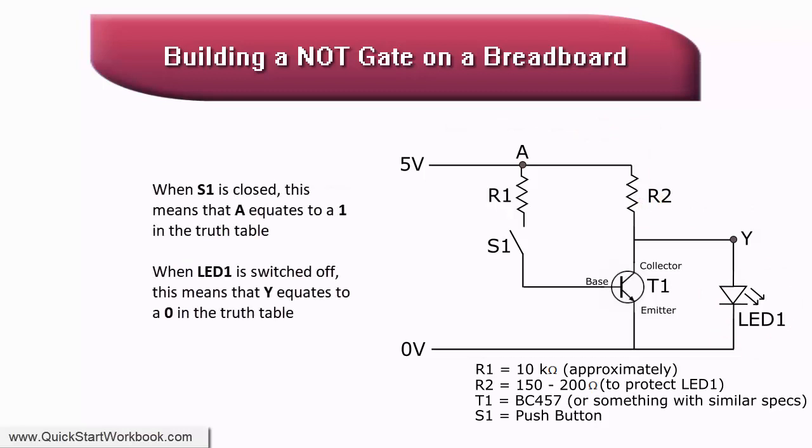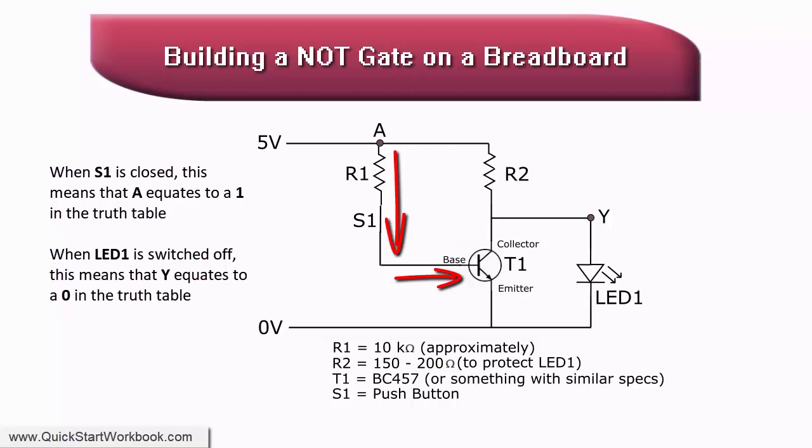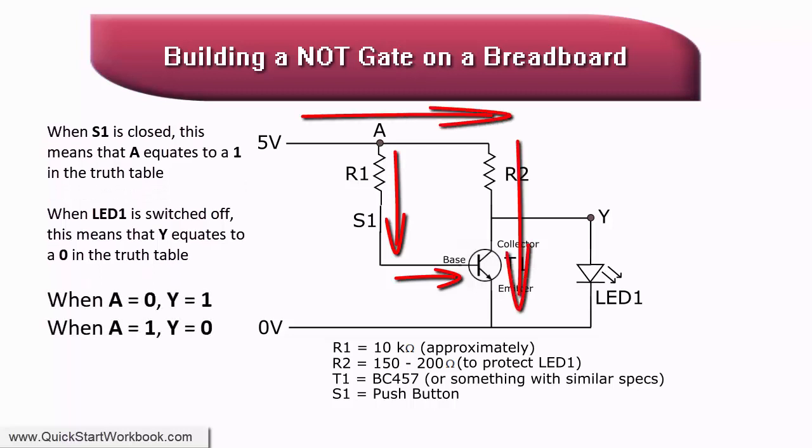When switch S1 is closed, current flows through R1 to the base of transistor T1 to switch it on. Current then flows through the transistor from the collector to the emitter. The current flowing through LED1 drops to 0 milliamps, switching it off.